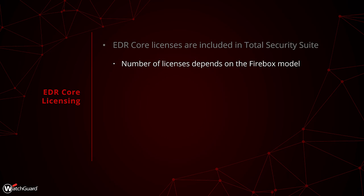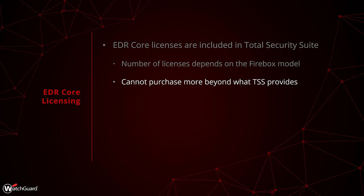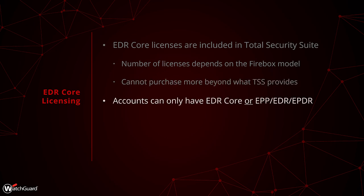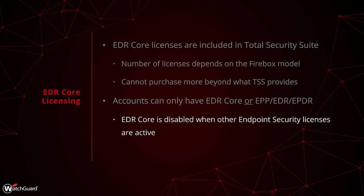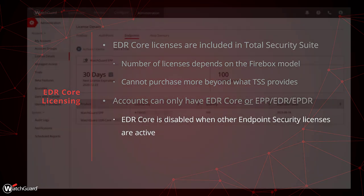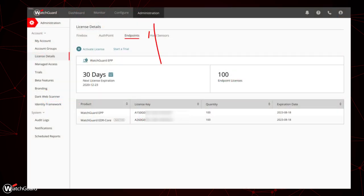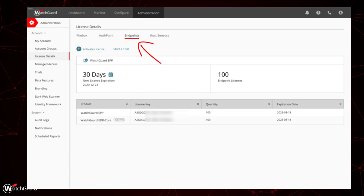You cannot purchase additional licenses beyond what Total Security Suite provides. The only way to gain more EDR Core licenses is to purchase more appliances with Total Security. Importantly, an account can have only EDR Core or one of our endpoint services like EPP, EDR, or EPDR. EDR Core will be disabled when other endpoint licenses are activated to an account. You can see how many licenses are on your account under Administration, License Details, Endpoints.